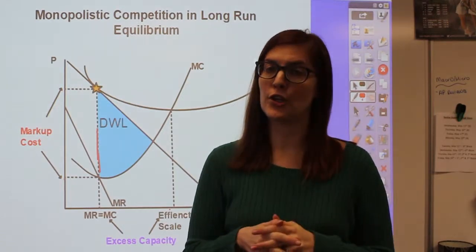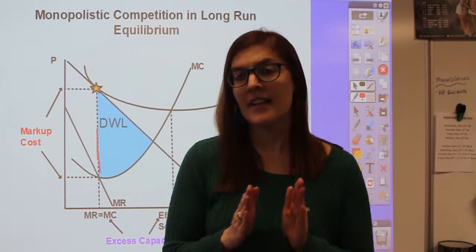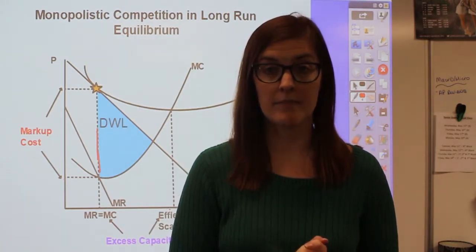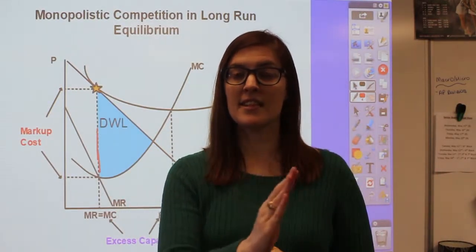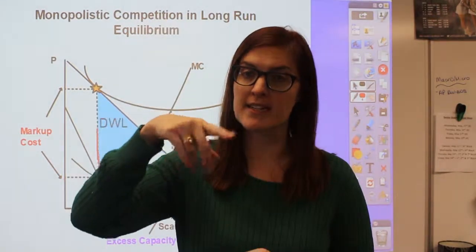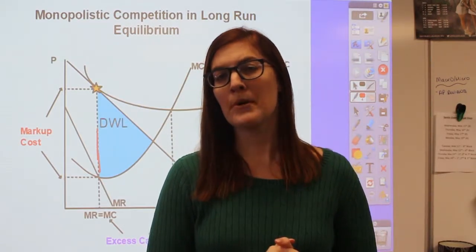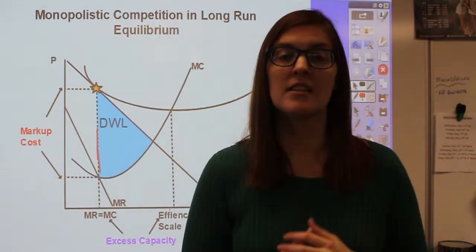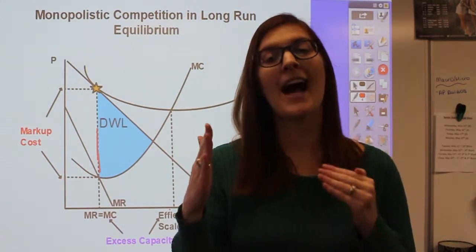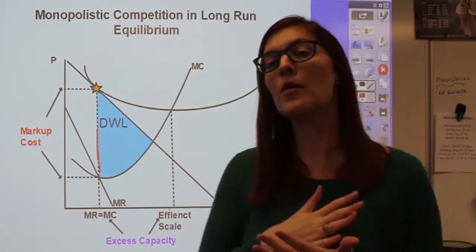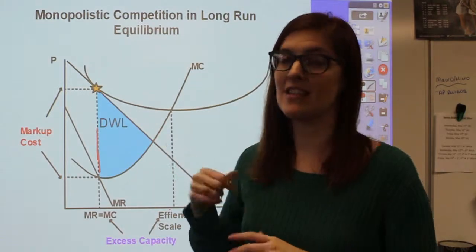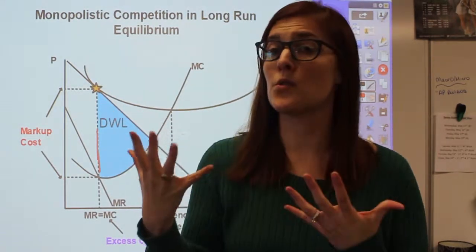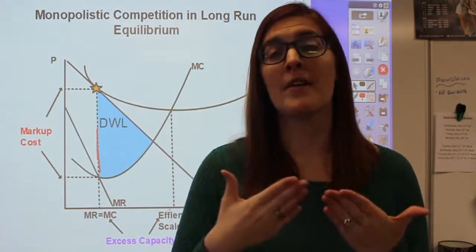This is where the firm is similar to perfect competition. The reason why this firm ends up in long-run equilibrium is because of the entry and exit of firms. In perfect competition, when a firm was making short-run profits, it gave incentive for other firms to enter the industry, increasing supply and lowering the price back down. The same idea applies here, but because demand is downward sloping, more firms entering the market decreases the demand for this individual firm, which drives the price down back to long-run equilibrium.